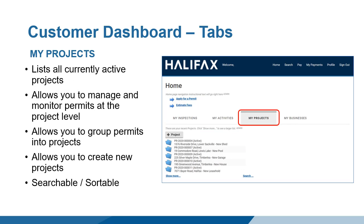The My Projects tab contains information on current projects. A project is a grouping of related permits. For example, a pool permit might have related lot grading, fence, and deck permits. These permits are frequently grouped together as they are all related to the same project.